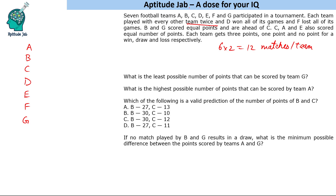What is the total number of matches? 7C2 into 2, that is 21 into 2, that is 42 matches in the tournament. There are 12 matches per team and 7 teams, so that is 84 matches. But in every match, if you count A vs B, you are also counting B vs A. So we divide by 2 to get 42.